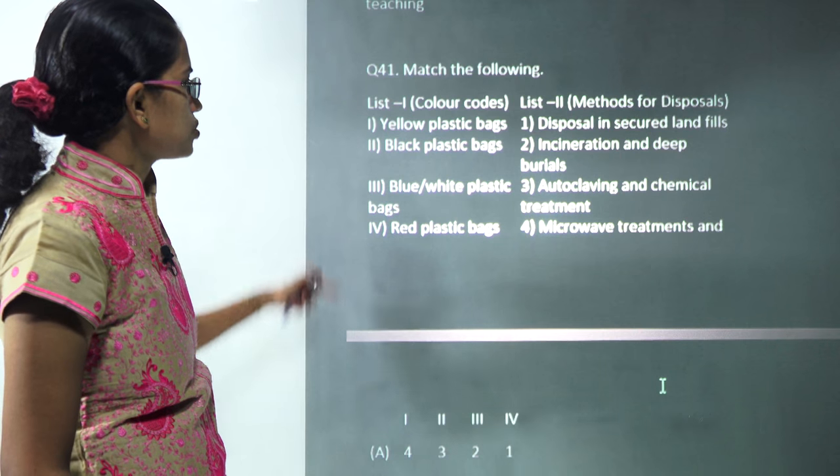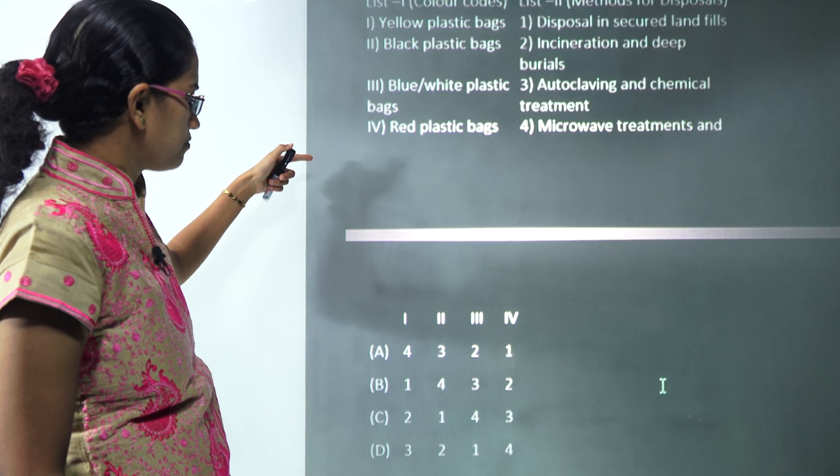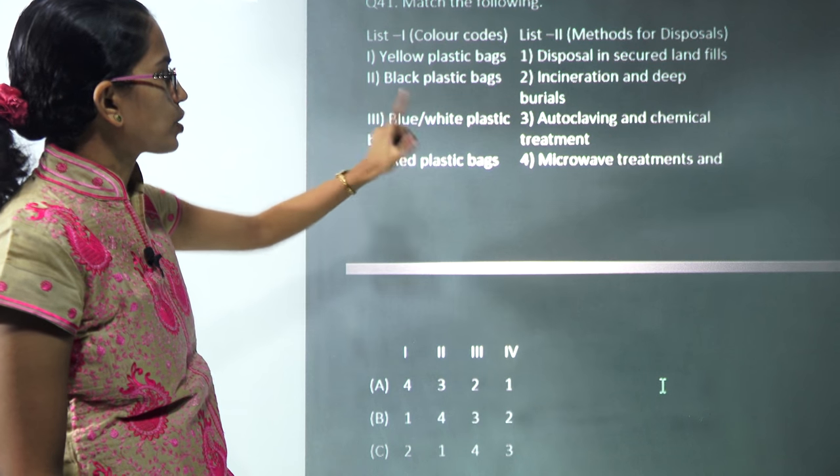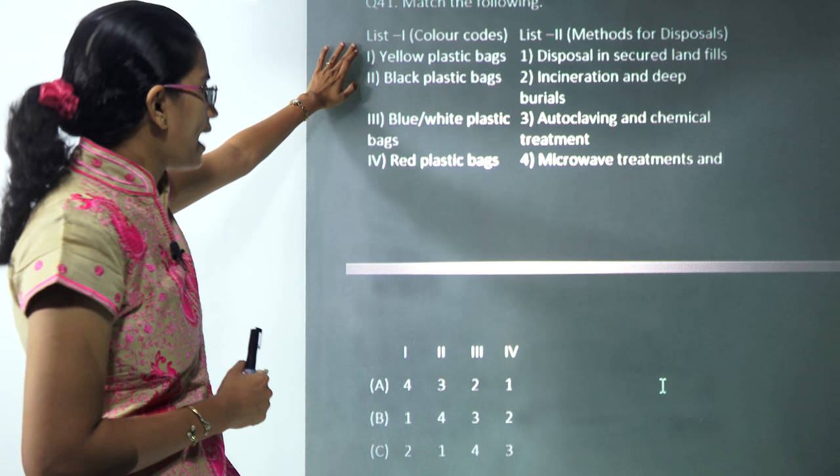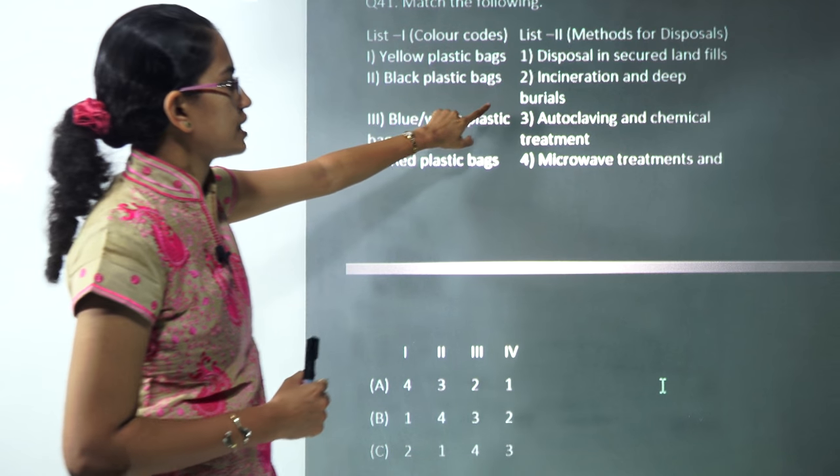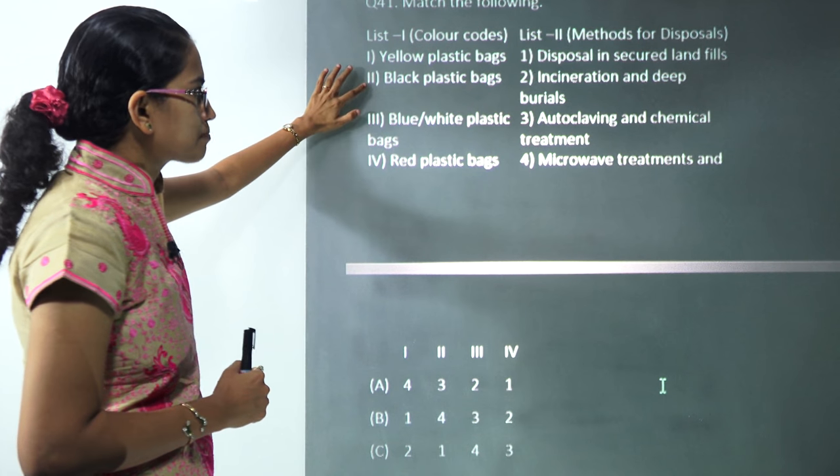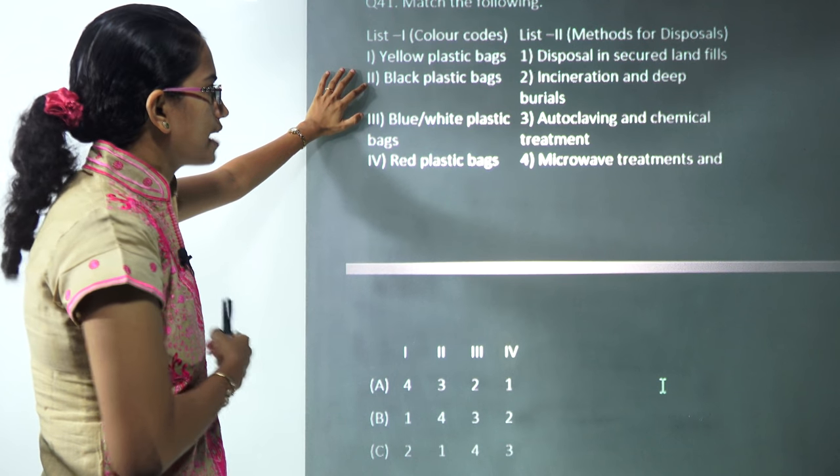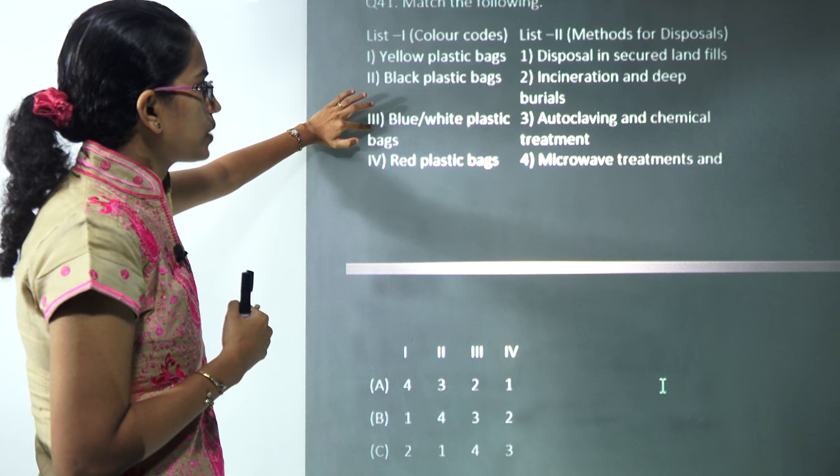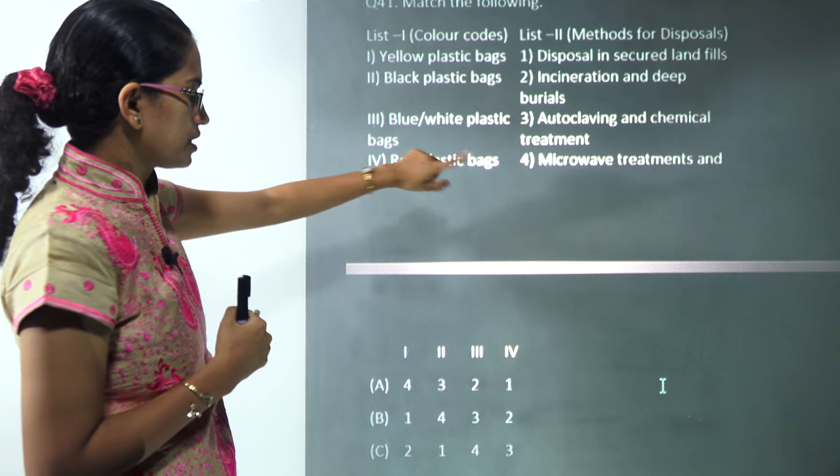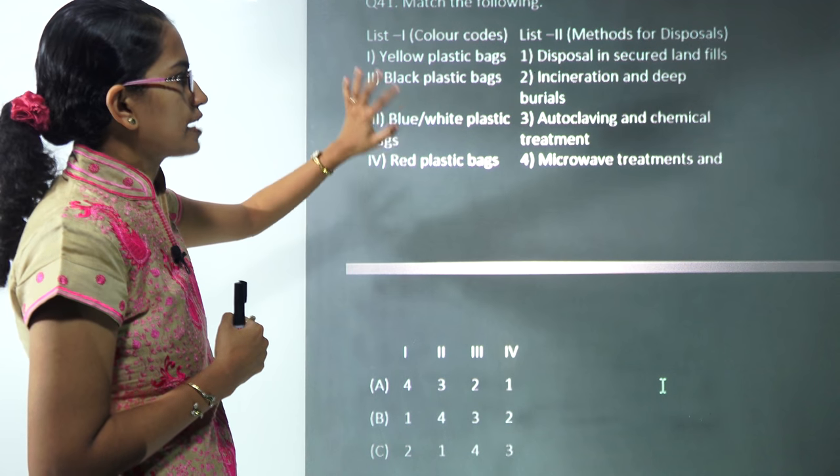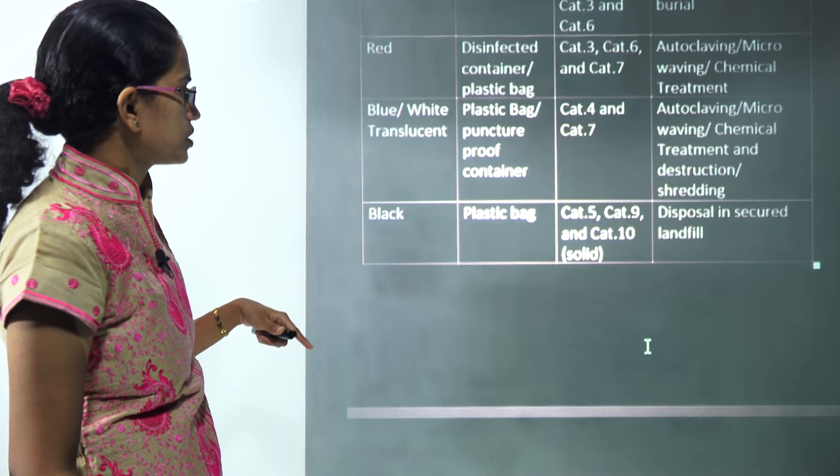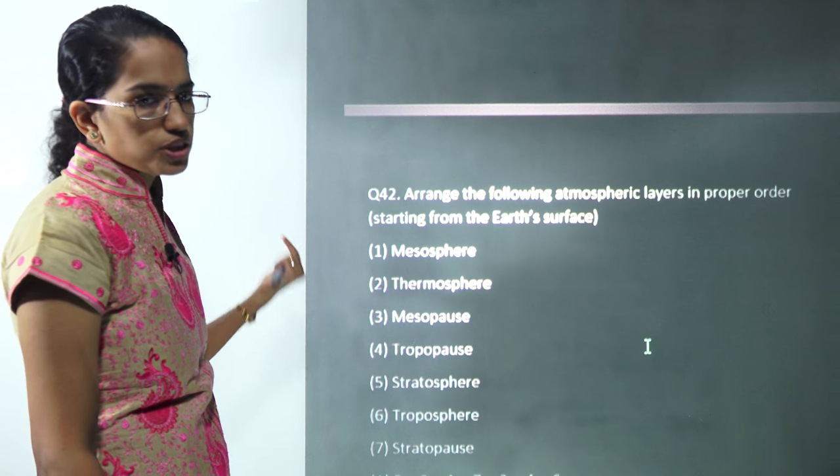The next: you have to match the coding for the bags. Yellow bag is meant for incineration and deep burials. Black plastic bag is meant for disposals in secure landfills. Blue and white plastic bag for microwave treatments, and red plastic bags for autoclave and chemical treatments. Those are the correct matches for this question, a very important question from medical waste.